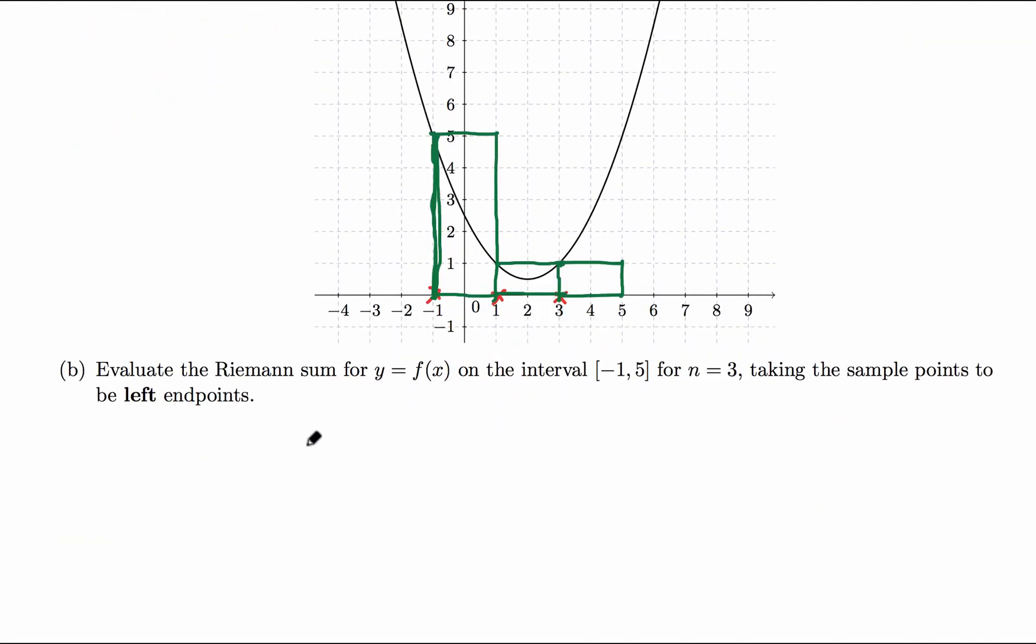Now in part B, evaluate the Riemann sum using the left endpoints, L3. What is that? It will be always width delta x times the sum of the heights: evaluate the function at negative 1, evaluate at 1, at 3.